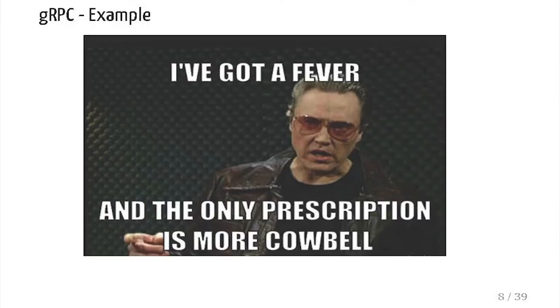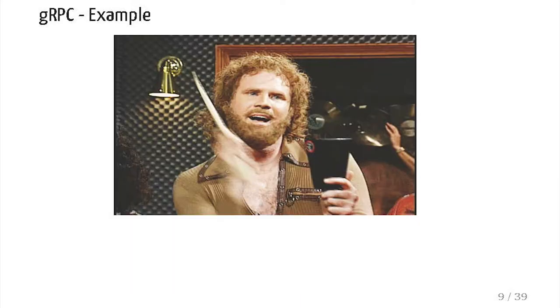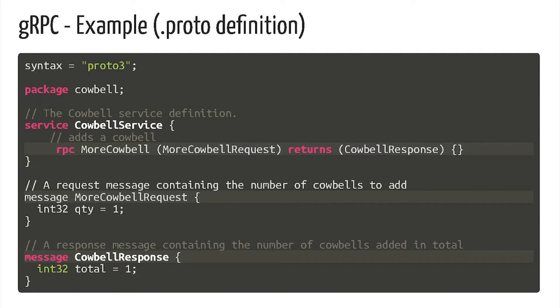To demonstrate, I'm just going to give you an example application. We're going to solve someone's problem here — this guy needs more cabal. So we're going to give him cabal. What does a cabal service or API look like in a proto-definition? I've highlighted the three lines there. The RPC line is a function called 'more cabal'. It takes a request message and returns a response. The request is basically just the quantity field, and the response will be the total cabals that have been added on the server.